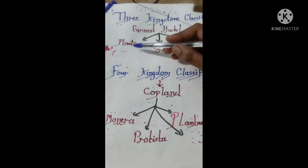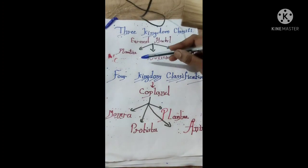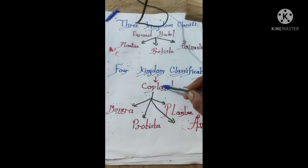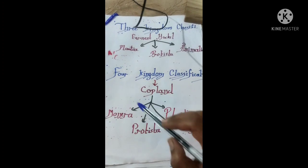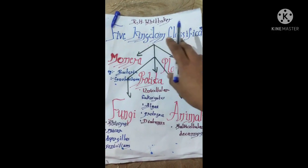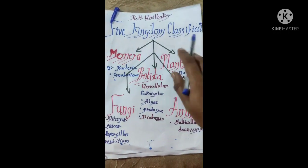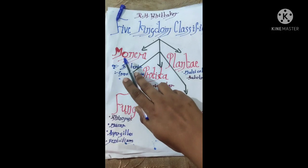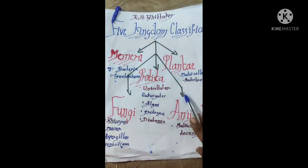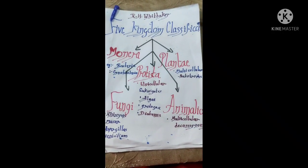Then three-kingdom classification given by Ernst Haeckel: Plantae, Protista, and Animalia. Four-kingdom classification given by Copeland: Monera, Protista, Plantae, and Animalia. Five-kingdom classification given by Robert Whittaker, in which we have Monera, Protista, Plantae, Animalia, and Fungi.